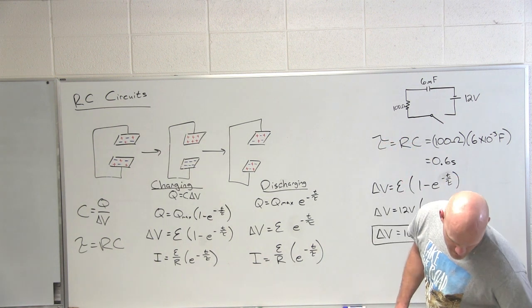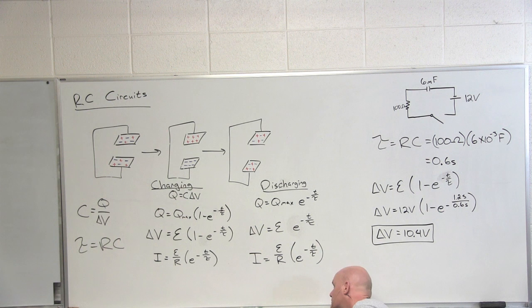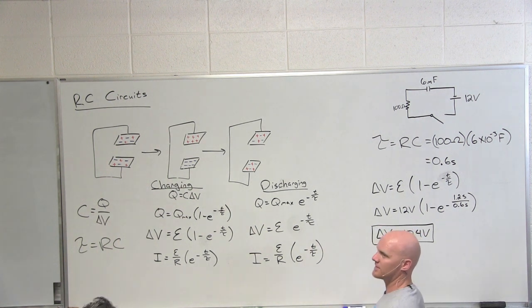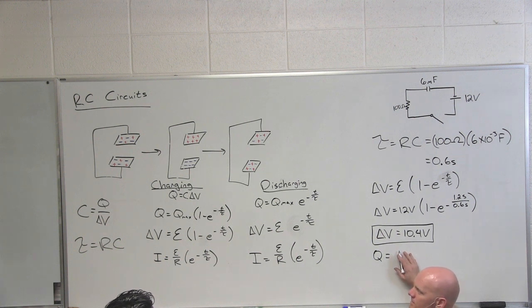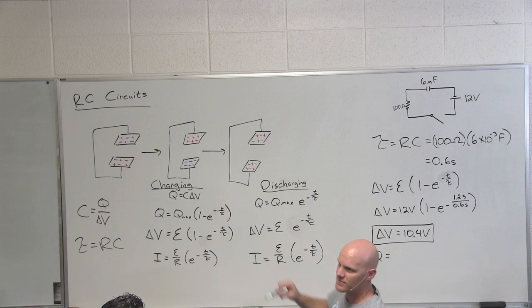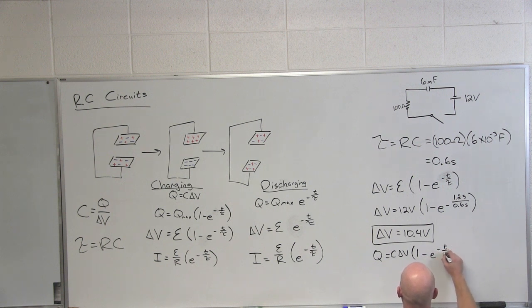Oh is there a second part? Oh and the charge. So what equation do we have to use for that? Same analogous kind of my bad Q equals and what is Q max again for a capacitor? It's C delta V. So in this case we're going to have C delta V as Q max times 1 minus E to the negative T over tau. I totally skipped the second half of that.